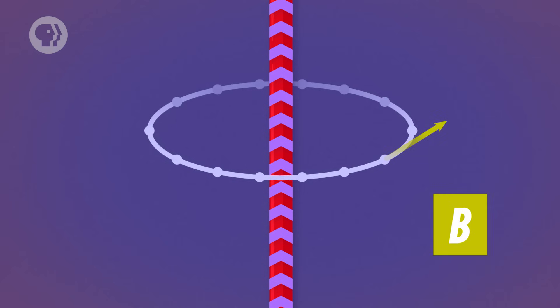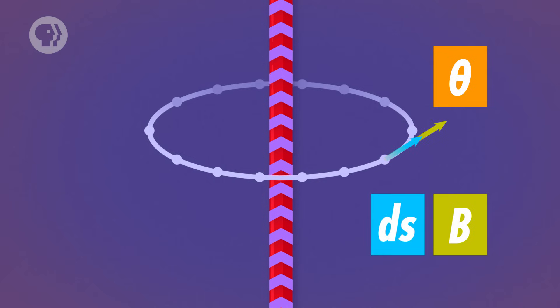B is the strength of the magnetic field at each point along the loop. Theta is the angle between the magnetic field and each point on the loop. And ds is referring to each infinitely tiny section of the loop. The mathematics of Ampère's law can get very complicated very quickly. But, to get a basic sense of how it works, let's return to our scenario,